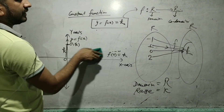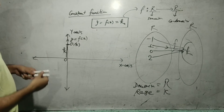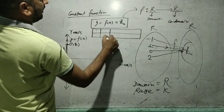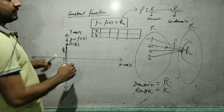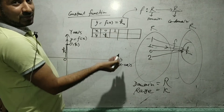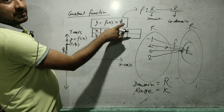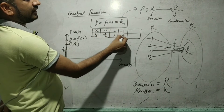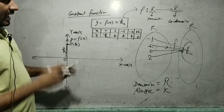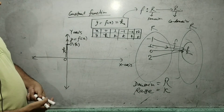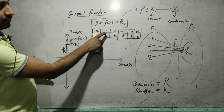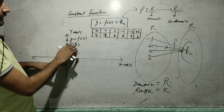Now I will make a table. Here is x and here is y. If x = 0, y = k. If x = 1, y = k. If x = -1, y = k. If x = -2, y = k. If x = 2, y = k. Every time you get the same value k. When x = 0, y is already k, so the point (0, k) is located.